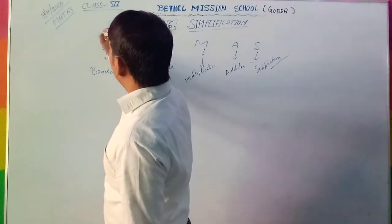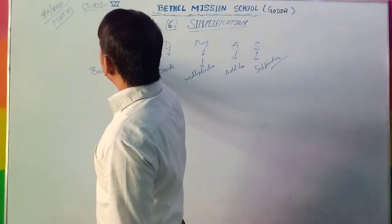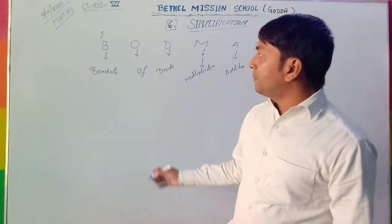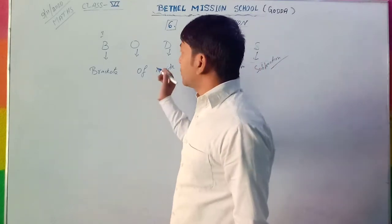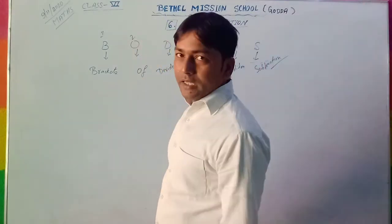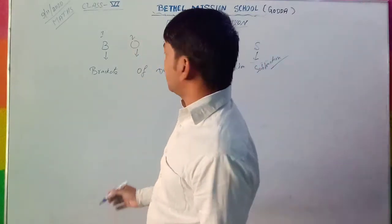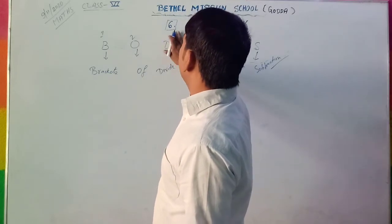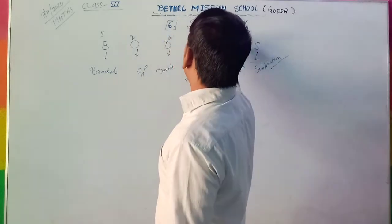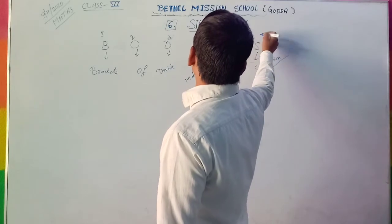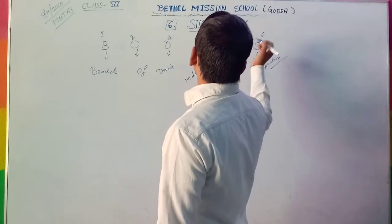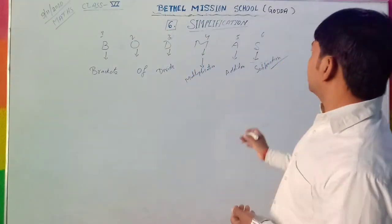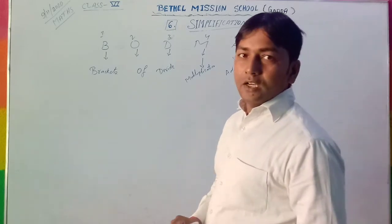First B — it means if there are brackets given, so first you have to solve the brackets. Then off. Then division. Then multiplication. Then addition. And at last, subtraction.